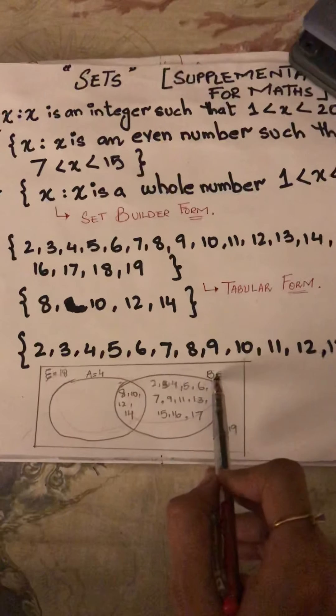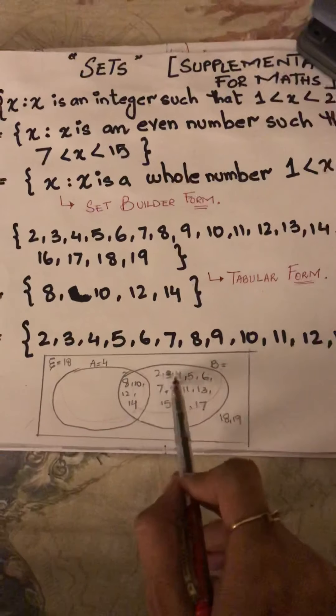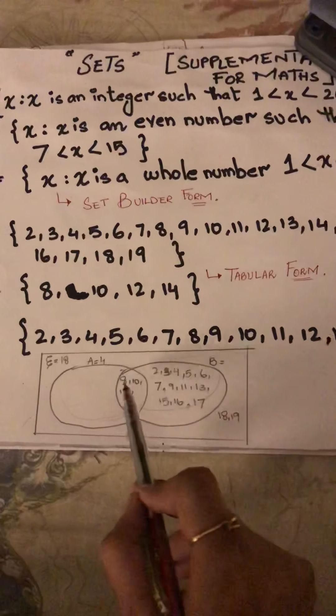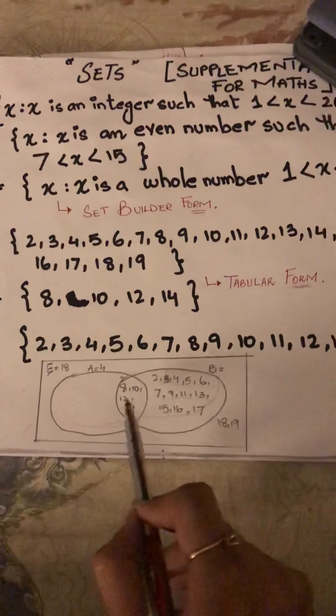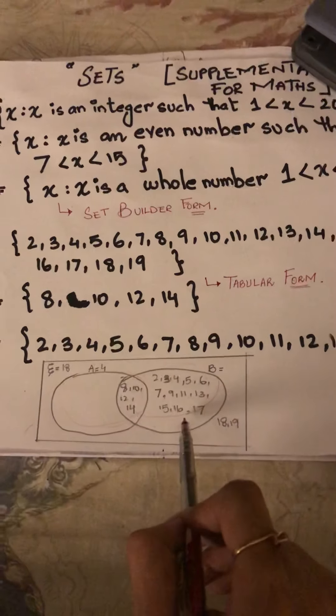The part of set B includes 2, 3, 4, 5, 6, 7, 8, 9, 10, 11, 12, 13, 14, 15, 16, and 17. As for 18 and 19, they are part of the universal set but do not belong to either set A or set B.